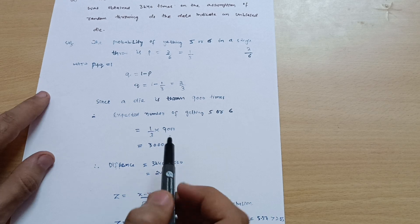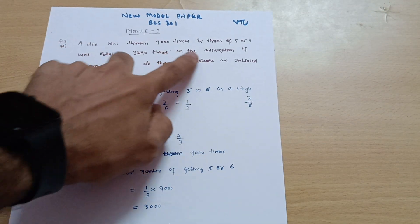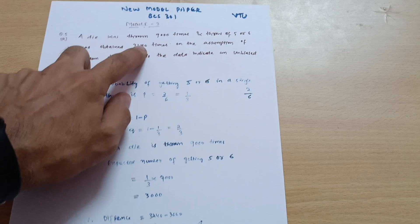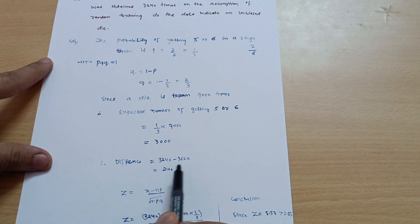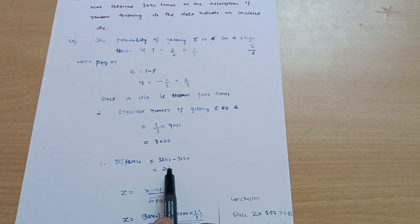This is the expected number of getting five or six faces when throwing a die nine thousand times. The difference is, in the question on the basis of assumption they are getting 3240 times these two faces. So the difference is 3240 minus 3000 equals 240.